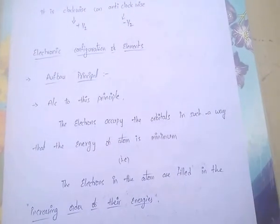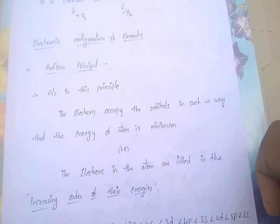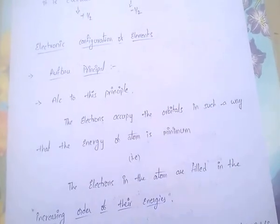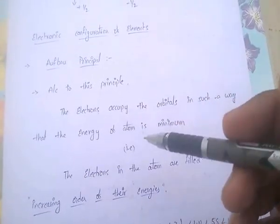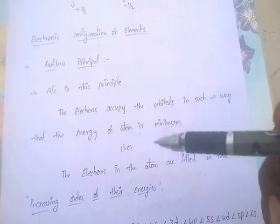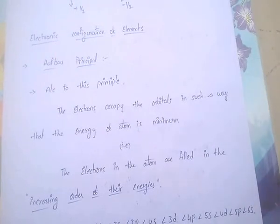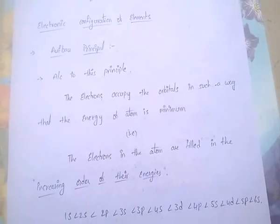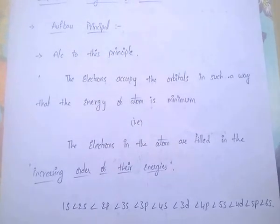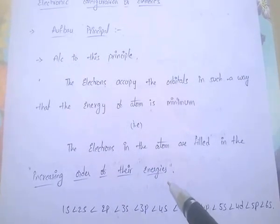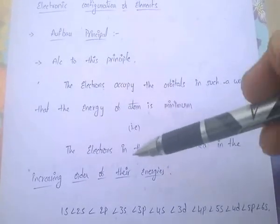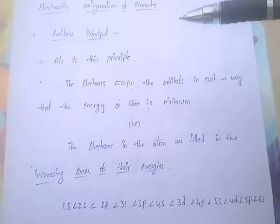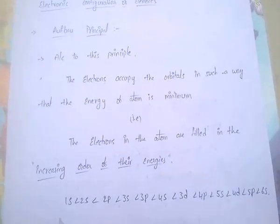Next, electronic configuration of elements. There are some principles in electronic configuration. First is the Aufbau principle. According to this Aufbau principle, the electrons occupy the orbitals in such a way that the energy of the atom is minimum. The electrons in the atoms are filled in the increasing order of their energies — minimum energy electrons are filled first and then higher energy orbitals are filled next.